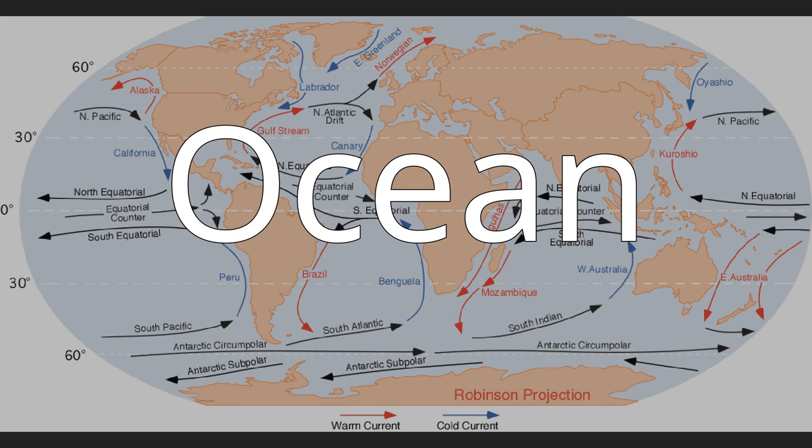Water continuously circulates in the oceans, creating ocean currents. These directed movements of seawater are generated by forces including temperature differences, atmospheric circulation and wind, the Coriolis effect, and differences in salinity. Tidal currents originate from tides, while surface currents are caused by wind and waves. Major ocean currents include the Gulf Stream, Kuroshio current, Agulhas current, and Antarctic circumpolar current. Collectively, currents move enormous amounts of water and heat around the globe, significantly impacting global climate and the redistribution of pollutants such as carbon dioxide into the deep ocean.